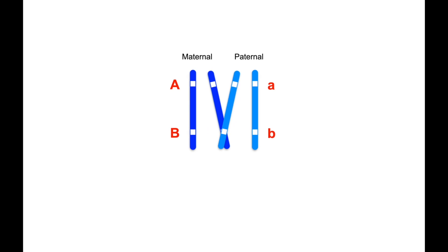Only this time, during prophase 1, a chiasma is formed between non-sister chromatids. That is, the maternal and the paternal chromatids.